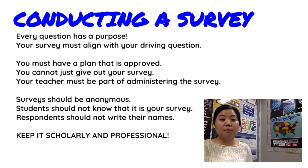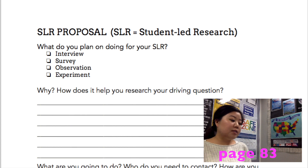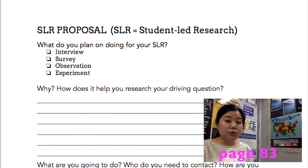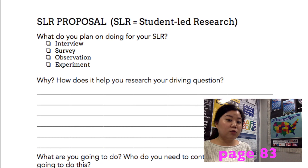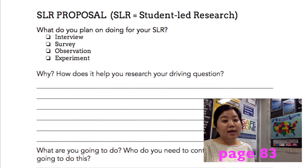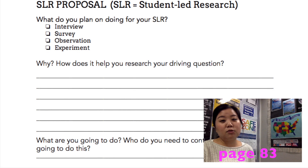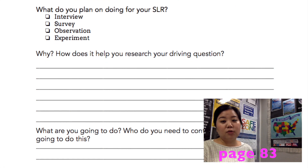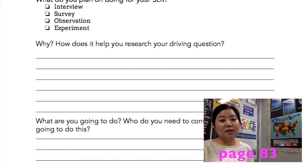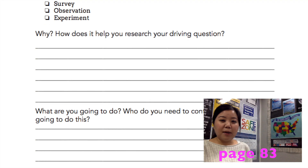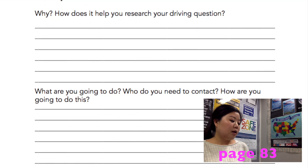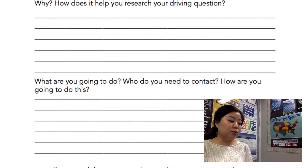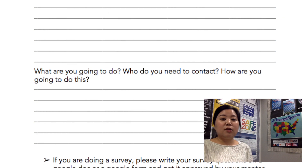On page 83 there is an SLR proposal where you'll have your teacher approve your plan to do an interview, survey, observation, or experiment, and explain why you chose that option and how it connects to your driving question. For example, if your driving question is about nuclear weapons, it's probably not a good idea to survey middle schoolers. Think carefully about which SLR format is best suited for your driving question. Once you decide on an interview, write out your five questions so your mentor teacher can approve them.